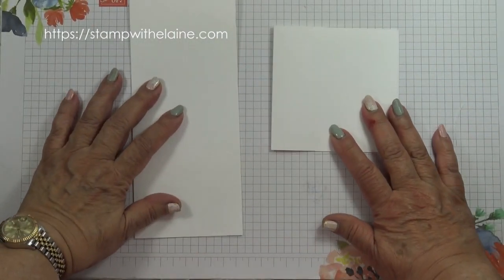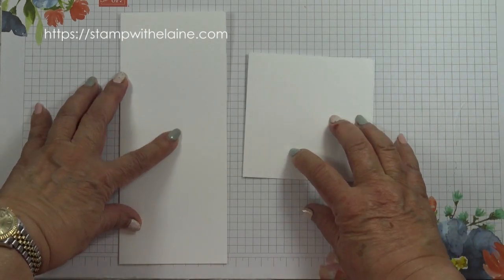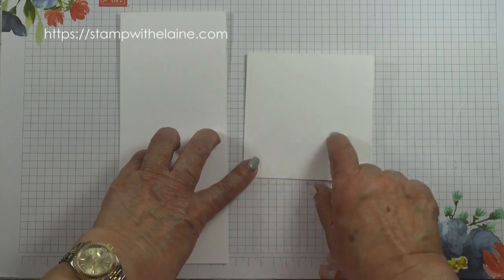And you just have this left over, and score that at four and one eighth. So there's your long slim card. It just about fits into the camera. There's your long one and there's your square one.